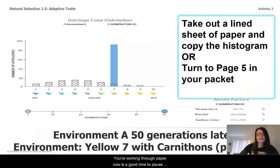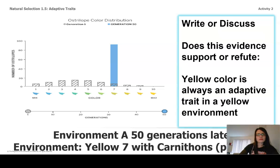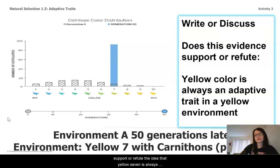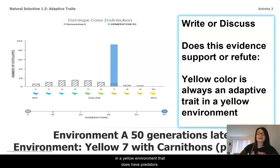If you're working through paper, now's a good time to pause, take out your paper, copy down this histogram, or go to page five in your packet. Now write or discuss: does the evidence you see here support or refute the idea that yellow seven is always adaptive in a yellow seven environment? Remember, this histogram is for the population in environment A, a yellow environment that does have predators.